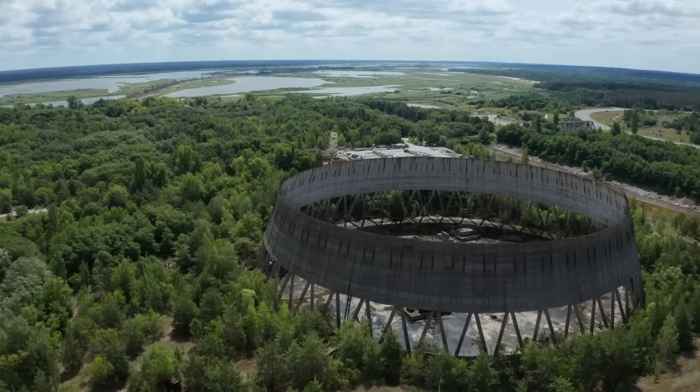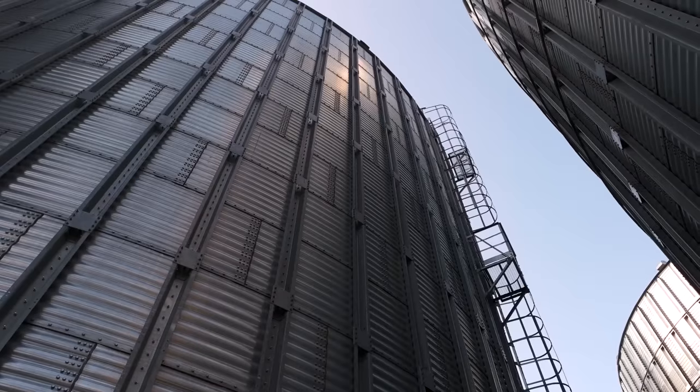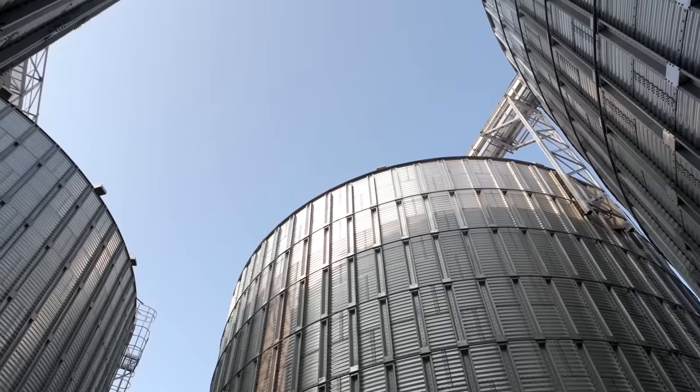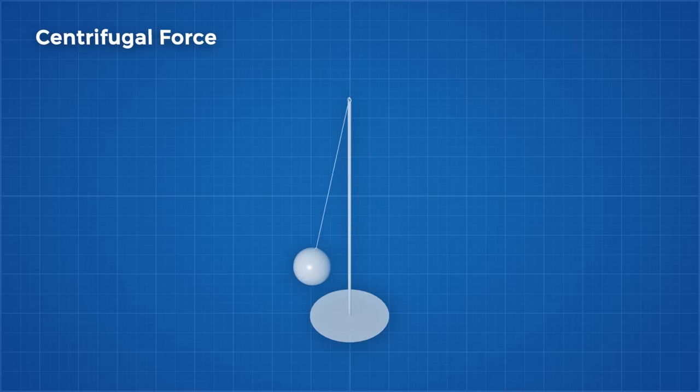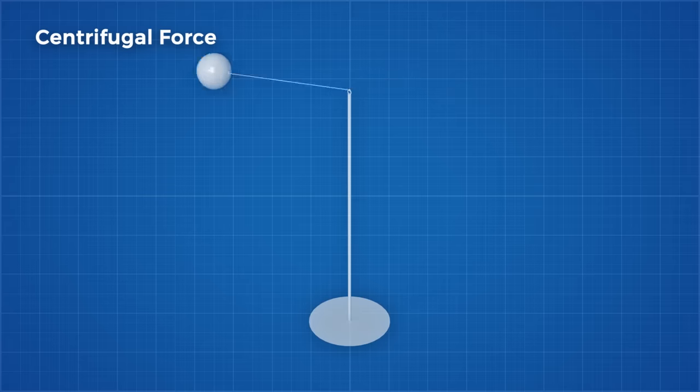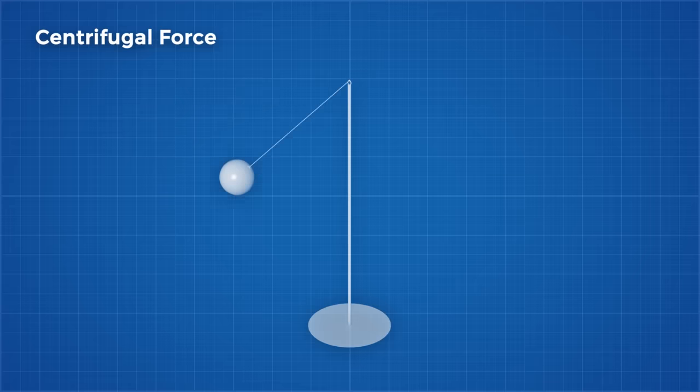So how would a space elevator solve this problem? By counterbalancing the weight of the structure by pulling upwards. We can do this thanks to centrifugal force. Imagine a tether ball swinging around a pole. At a certain angular velocity the string will be held straight and taut against the pole, because centrifugal force, an apparent force that appears in a rotating reference frame, pulls outwards.